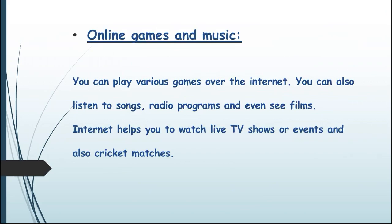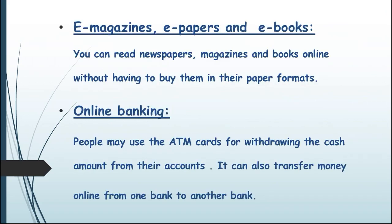You can play various games over the Internet, listen to songs, radio programs, and even watch films. The Internet helps you watch live TV shows, events, and cricket matches. You can search different websites to play games and download music — all related to entertainment. All those magazines, newspapers, or books available on your computer over the Internet are called e-magazines, e-papers, or e-books.